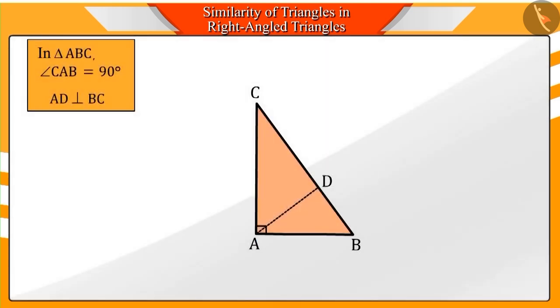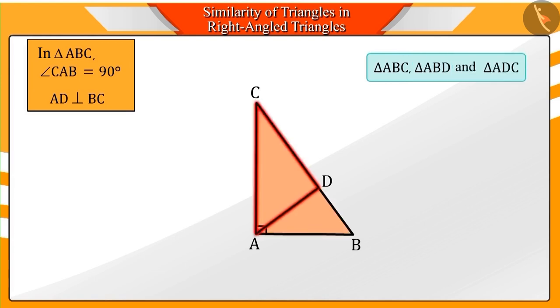Absolutely correct. Here, we get three triangles: triangle ABC, triangle ABD, and triangle ADC. We can see that all of these three triangles are right-angled triangles.